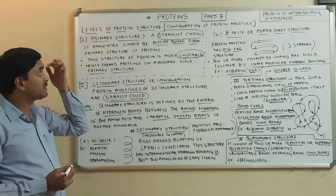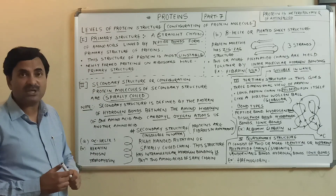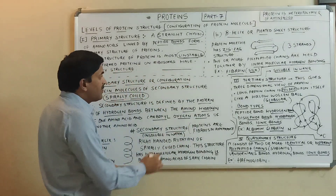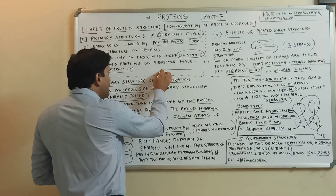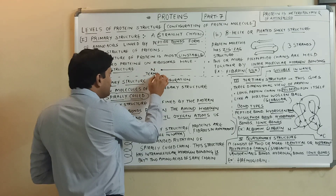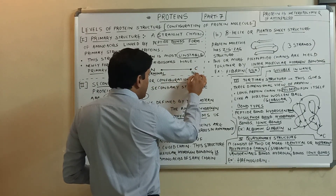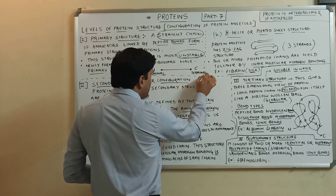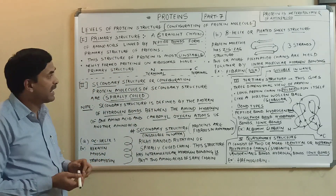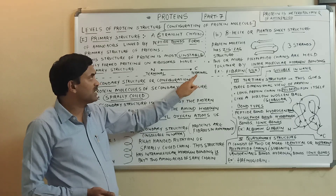If I talk about the straight chain of amino acids in a primary structure, the protein chain has two terminals. One is called the N-terminal, and the other is called the C-terminal. The N-terminal represents the first amino acid, and the C-terminal represents the last amino acid.